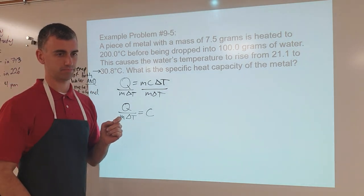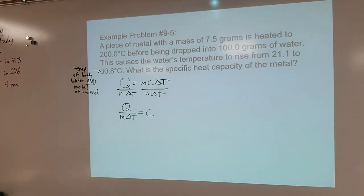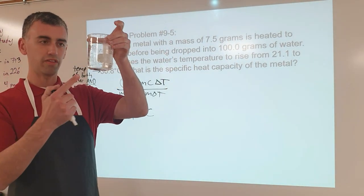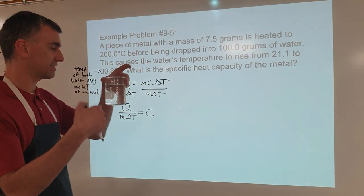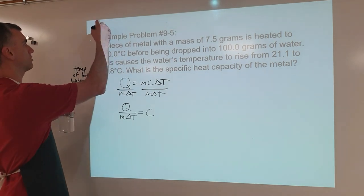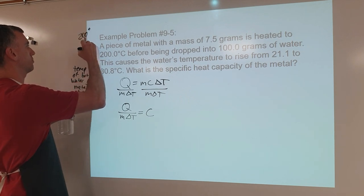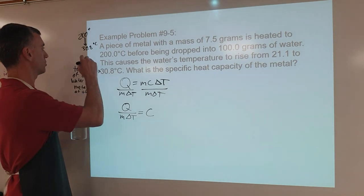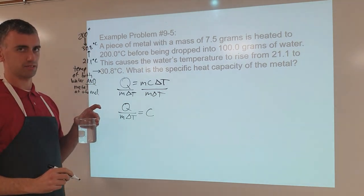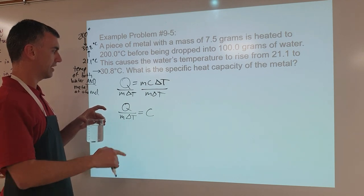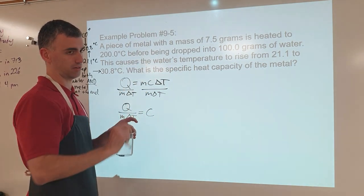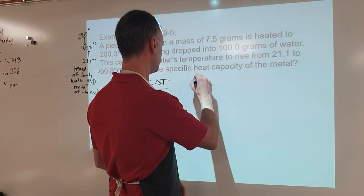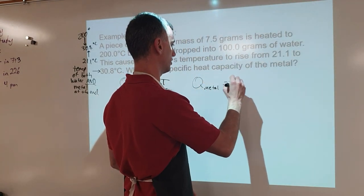So we're going to take advantage of something. We need to make an assumption. When the piece of metal went into this beaker, the number of joules that the metal lost as it cooled down from 200 degrees down to 30.8 degrees Celsius is exactly the same as the number of joules the water absorbed when it warmed up from 21.1 degrees Celsius up to 30.8. So the amount of energy lost by the metal is equal to the energy gained by the water: q from metal equals q of water.